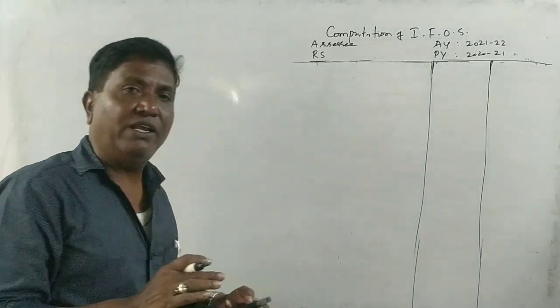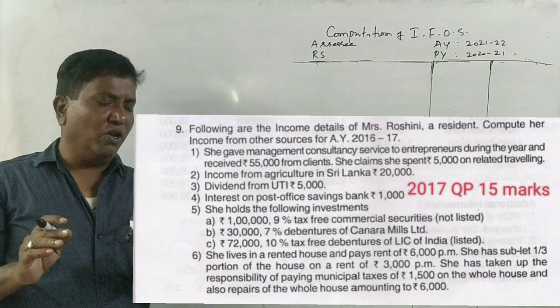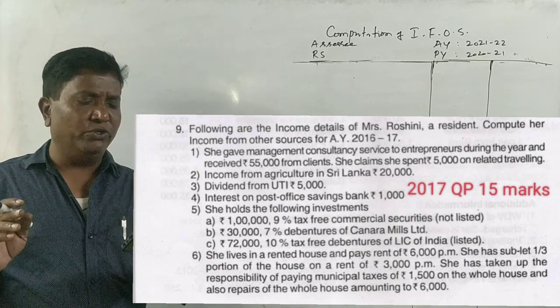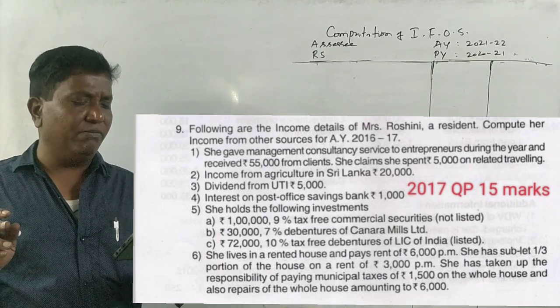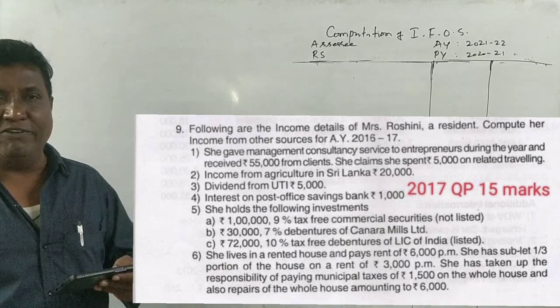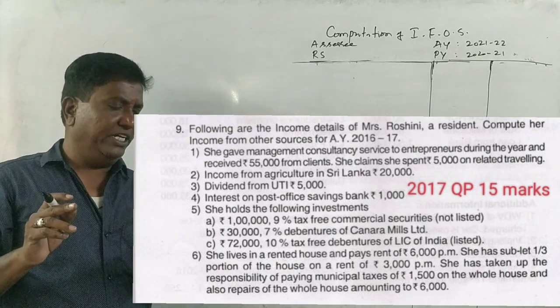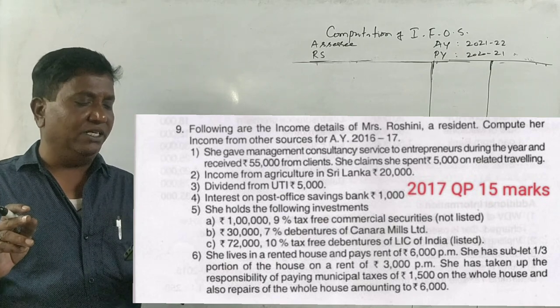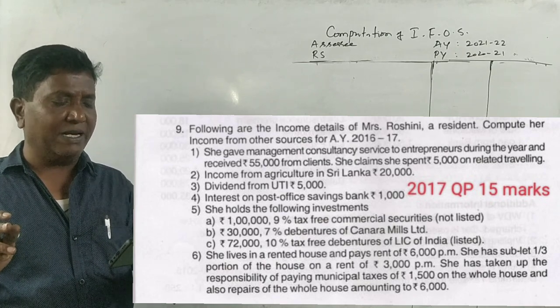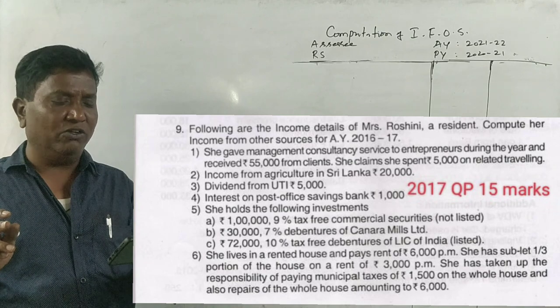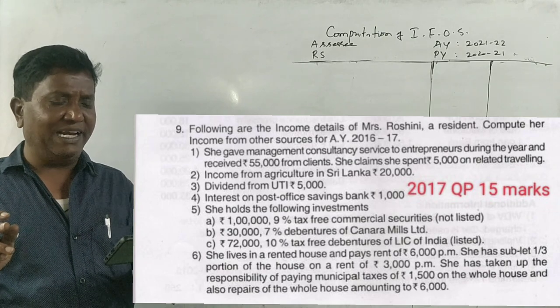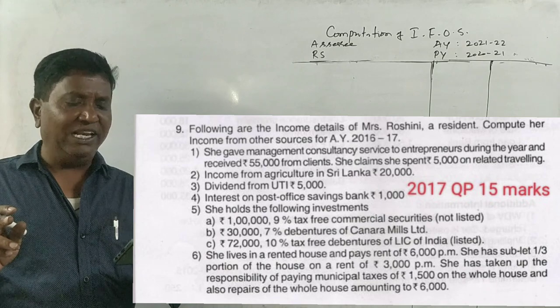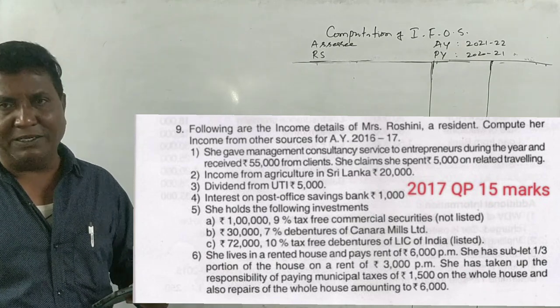Guys, 2017, 15th March question is there. Following are the income details of Mrs. Roshini, a resident. Compute the income from other sources for the assessment year 21-22. She gave management consultancy services to an entrepreneur during the year, received 55,000 from client. She claimed she spent 5,000 on related travelling.